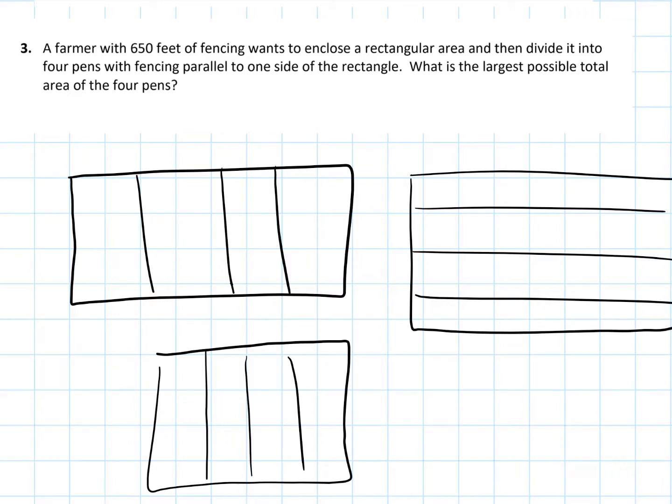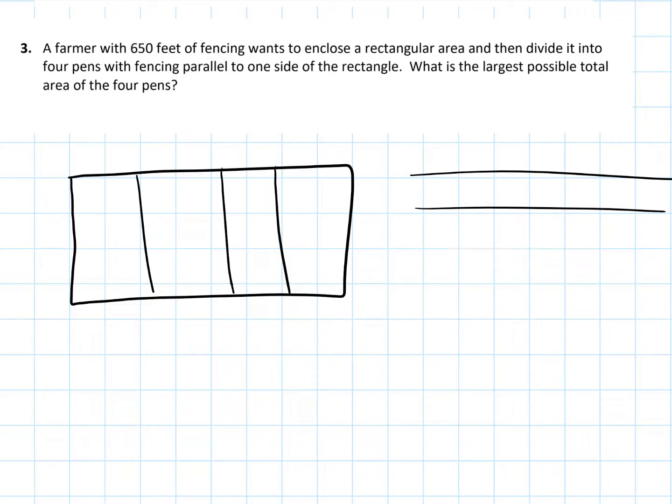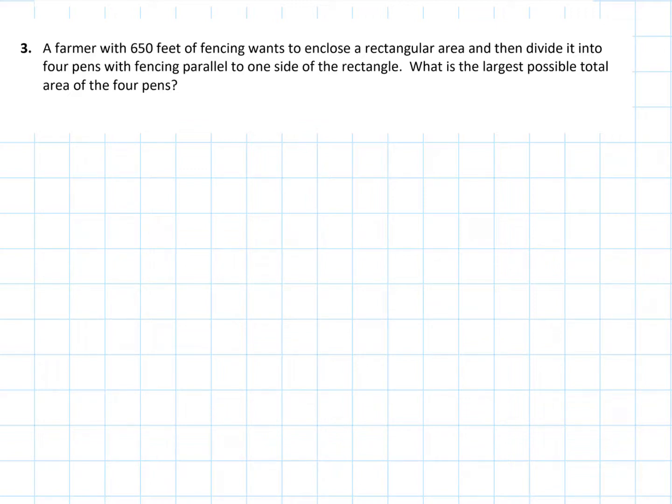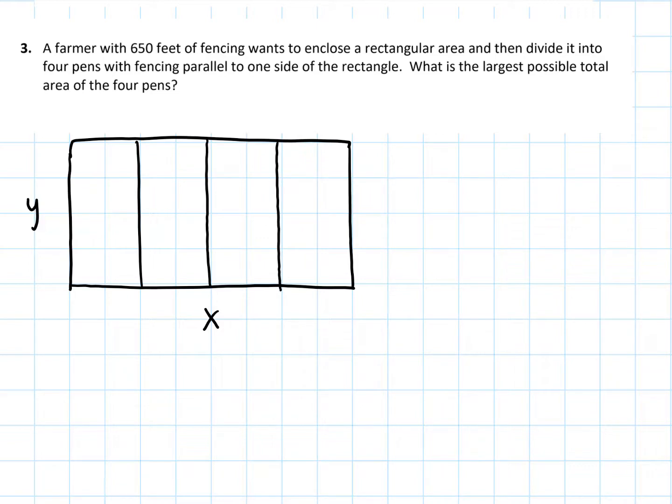So these are all the different possibilities, but because I'm going to label with variables anyway, and things can be switched and reoriented, I'm going to just go ahead and get started here and draw in a rectangle and give it some labels. I'm going to go ahead and call this side X, this side Y, and then I'm just going to put in my parallel fencing to create those four pens. So he has this interest in creating a rectangular area with those four pens, and he wants to find the largest possible total.